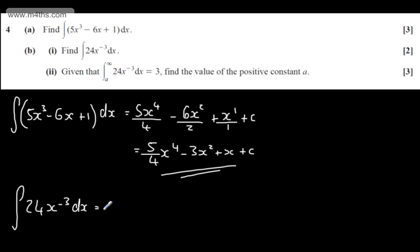Again, we raise by a power and divide by the new power. So we'll have 24x to the minus 2, divided by the new power of minus 2, plus a constant of integration.